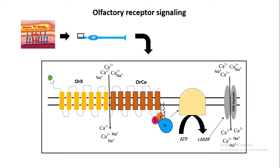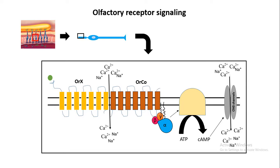Olfactory receptors are mostly found in a complex of olfactory receptor and a co-receptor. This kind of configuration is true for mouse, flies, and also in humans. Olfactory receptors are mostly seven-transmembrane G-protein-coupled receptors and they follow the classical Gs, or G-stimulatory, G-protein signaling paradigm. The olfactory receptor binds to a heterotrimeric G-protein, and once the odor molecule binds to the olfactory receptor, the alpha subunit of the heterotrimeric G-protein dissociates.